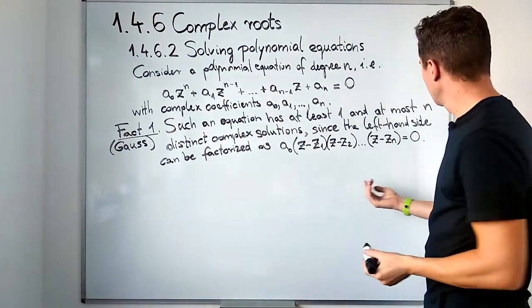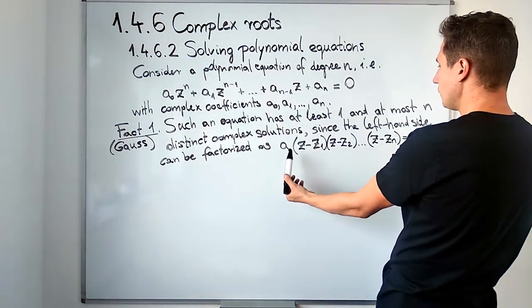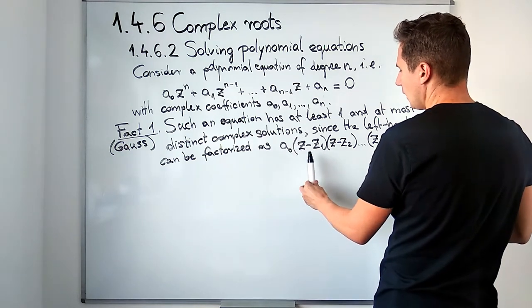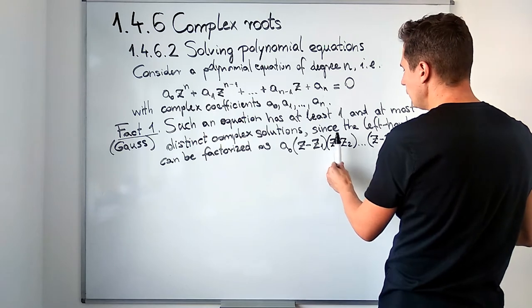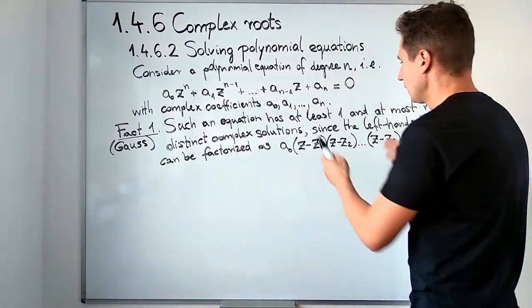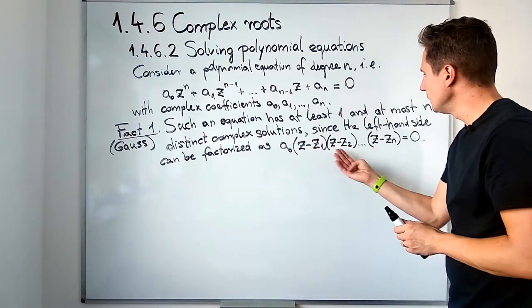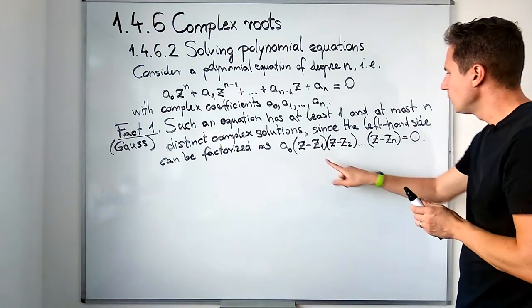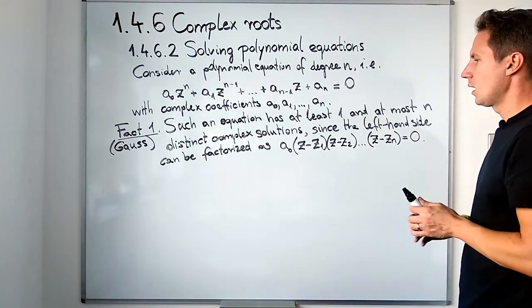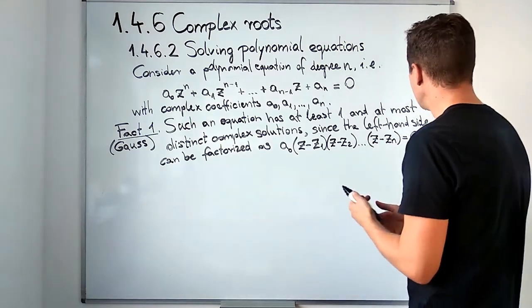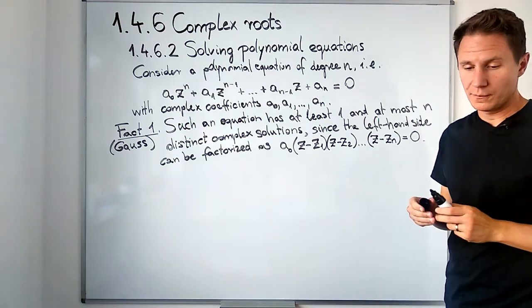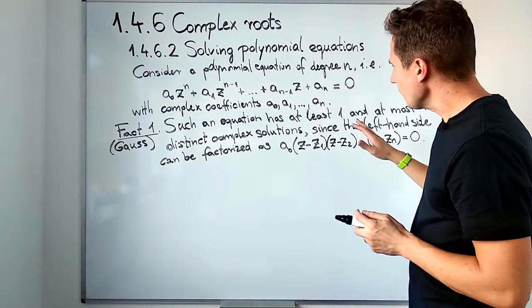So this means that in order to solve this equation, to get zero out of the left hand side, we have to plug in either z₁ or z₂ or zₙ for z, and that would result in one of these factors being zero and giving us a product that is zero. So these z₁ to zₙ are the numbers, are the roots of our polynomial, or the solutions of this polynomial equation.